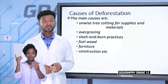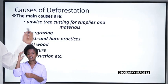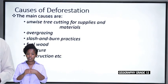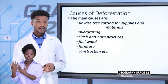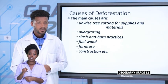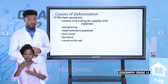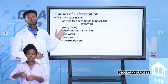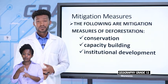The major causes for the depletion of forests in Ethiopia are: first, unwise tree cutting for supplies and materials; second, overgrazing; third, slash and burn practice; and also cutting trees for fuel wood, furniture, and construction purposes. These causes make the forests to be cleared from our country.